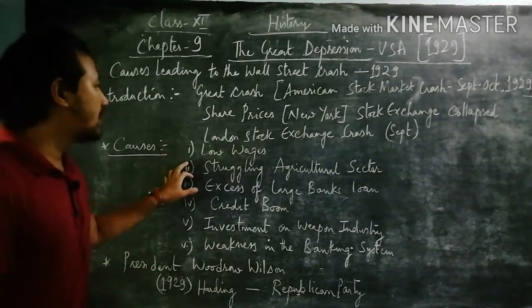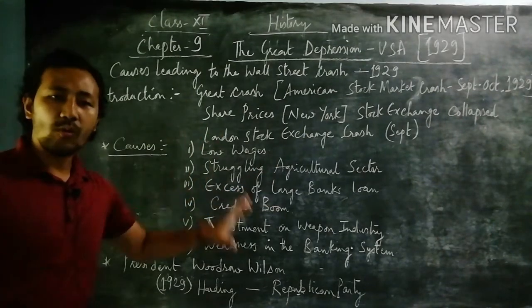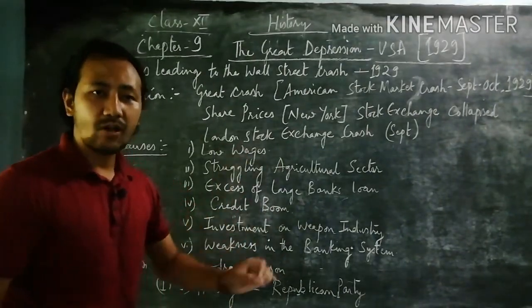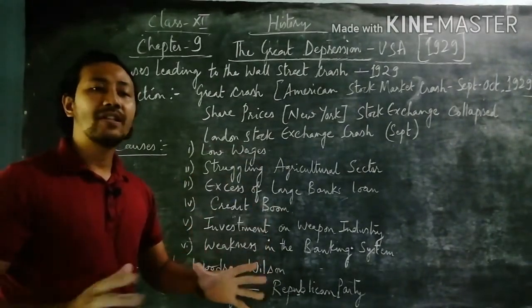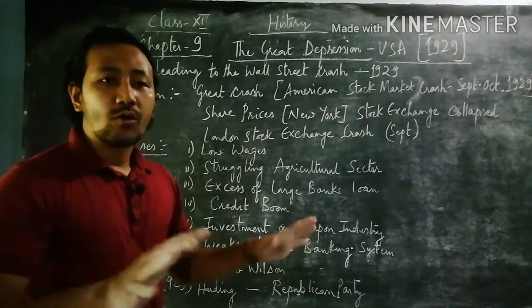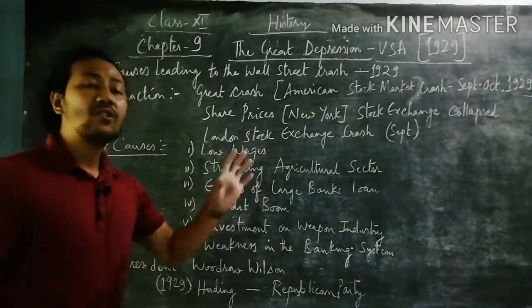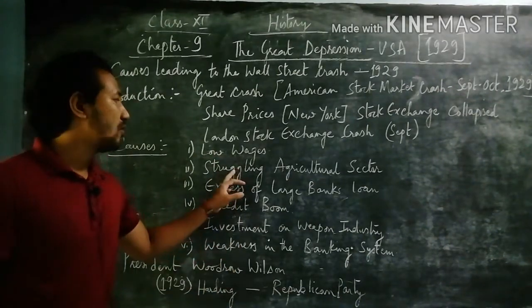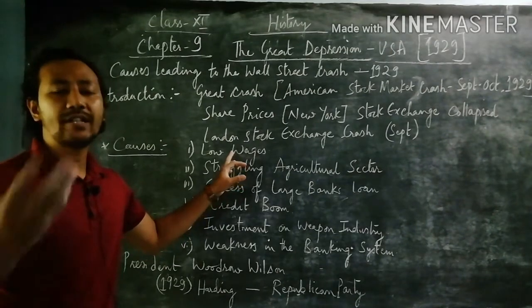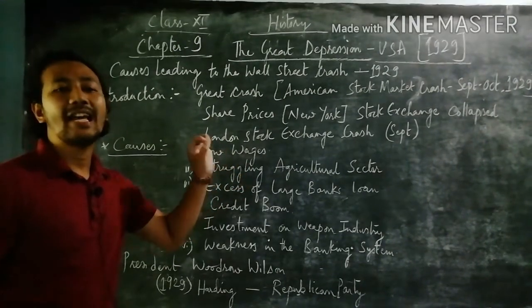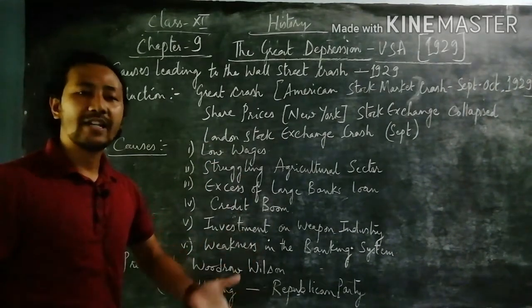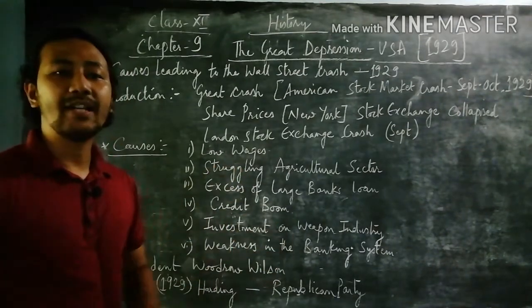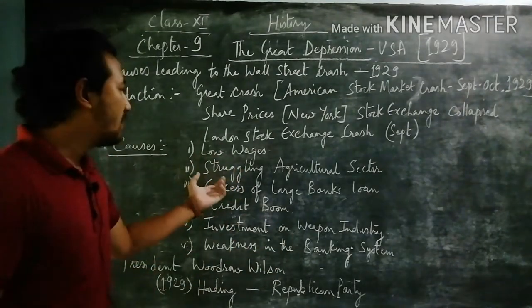First, we see the low wages. When the stock exchange collapsed and the share market of New York also collapsed, many of the citizens of America did not get any kind of jobs — there was lots of unemployment. And those who could retain their jobs were given low wages, whether working for eight hours or ten hours, whatever the duration given by the company or industry — they were given low wages.